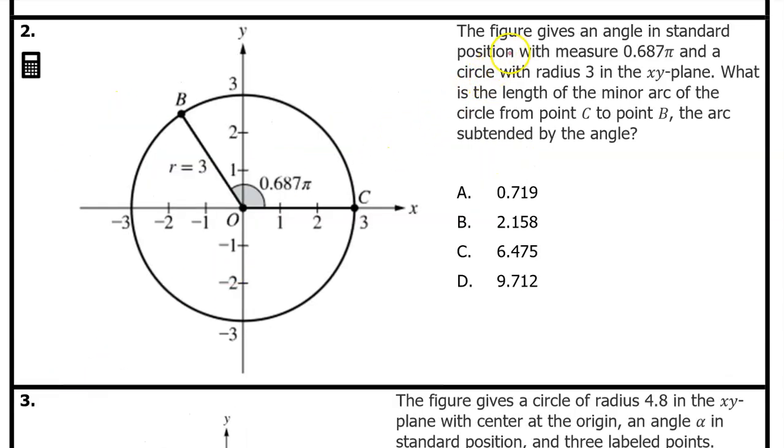Number 2. The figure gives an angle in standard position with measure 0.687π and a circle with radius 3 in the xy plane. What is the length of the minor arc of the circle from point C to point B? The arc subtended by the angle. They are asking us for the length of this arc right here. Let's call it L for length. We have learned that the angle measure in radians is equal to the arc length divided by the radius.